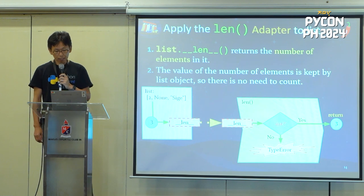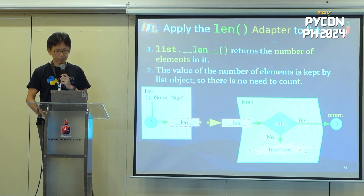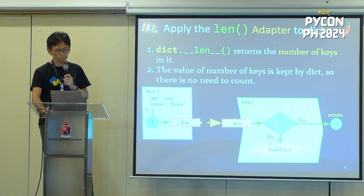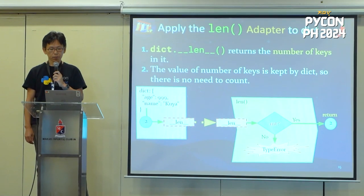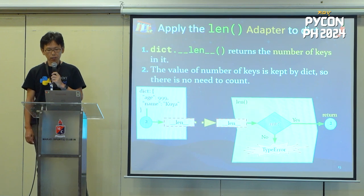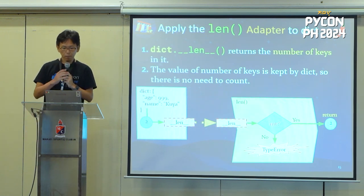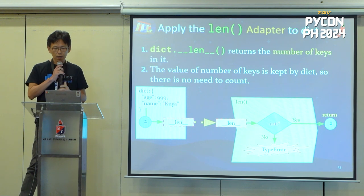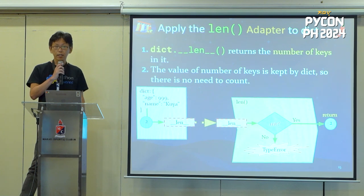The list object knows its number of elements, which is 3. So `__len__` returns 3. The len adapter checks this value and finally returns 3. Apply the len adapter to a dict. Dict also has a `__len__` method that returns the number of keys. For example, if a dict has `age: 999, name: 'clear'`, it has 2 keys, so it returns 2.